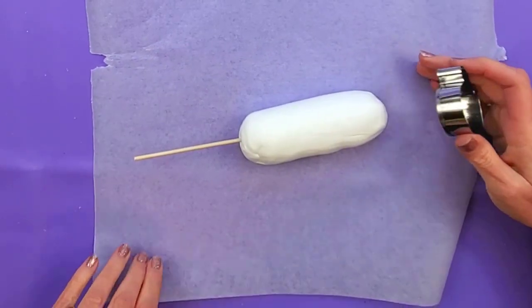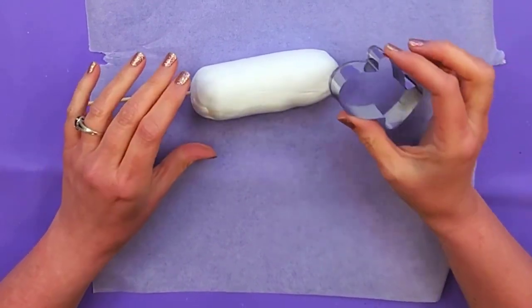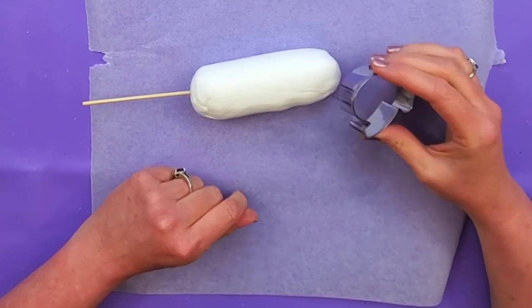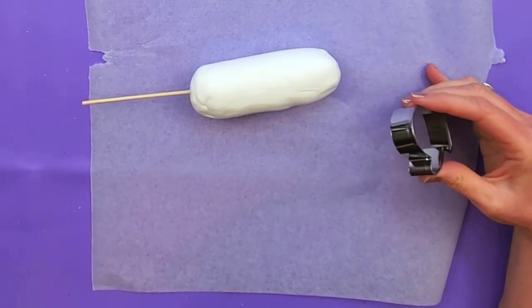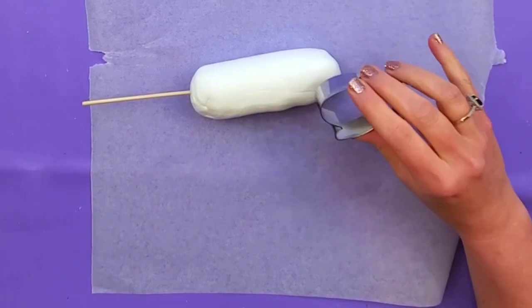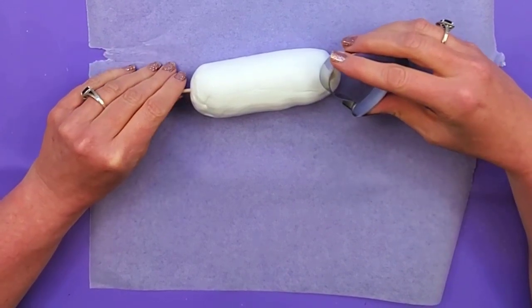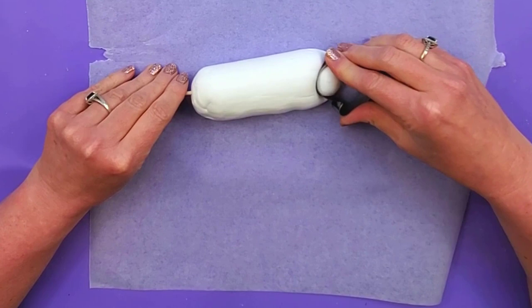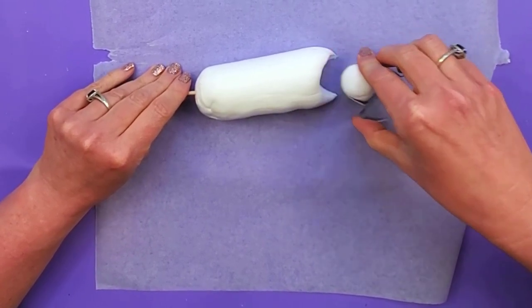Now I'm gonna make a bite out of this one. This is just a mitten cookie cutter. You can use any like a heart or circle, anything that has that rounded edge. I'm just gonna use that to make the bite out of it, and then I'm just gonna press in these edges because we don't want those to be so drastic.